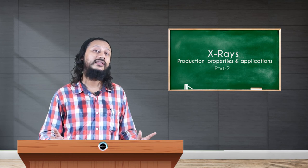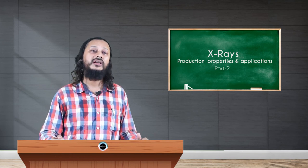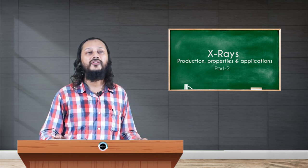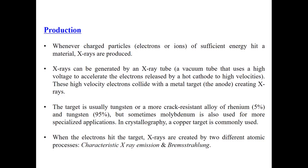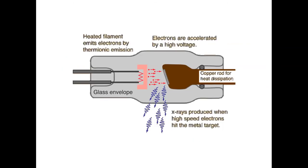Now when the electrons hit this target, the X-rays that are created are of two different processes. One is the characteristic emission and the other is the Bremsstrahlung. We will see what these are because these are important.